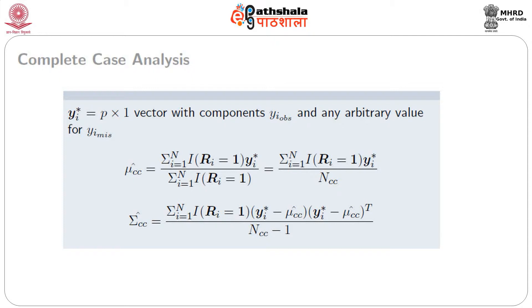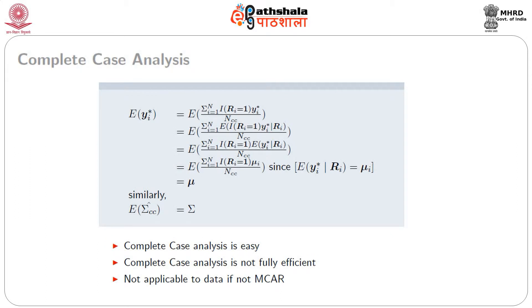Basically, y_i* for all those i's where we have at least n_i measurements, divided by n_cc, where n_cc represents the number of complete cases. Similarly, sigma hat cc comes out to be the sum of (y_i* minus mu hat cc) times (y_i* minus mu hat cc) transpose, summed over all y_i* for which n_i equals p, divided by n_cc minus 1.